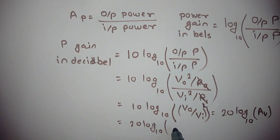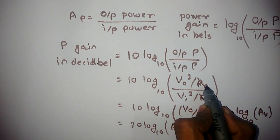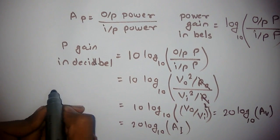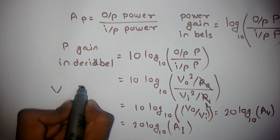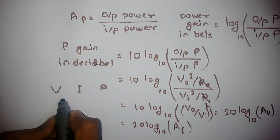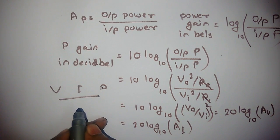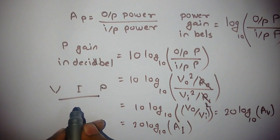So if output resistance and input resistance are the same, then our voltage gain, current gain, as well as power gain in decibels are equal. They are not equal in normal gains; they are equivalent in decibels.